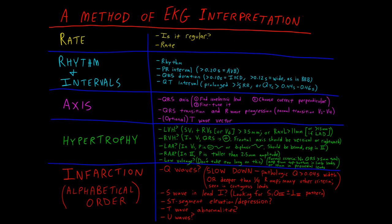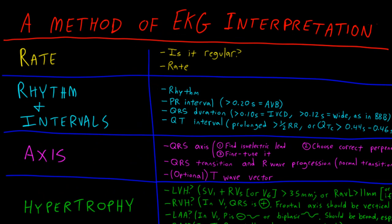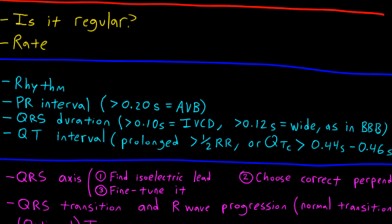Here's our systematic method. When I read an EKG, after I've done rate and looked at the PR interval, I look at the QRS duration. If my QRS is wider than three small boxes, or 120 milliseconds, I call it wide. This is usually because of a bundle branch block. The immediate next question I ask myself is: do I have a right or a left bundle branch block? To answer this question, I look at lead V1.